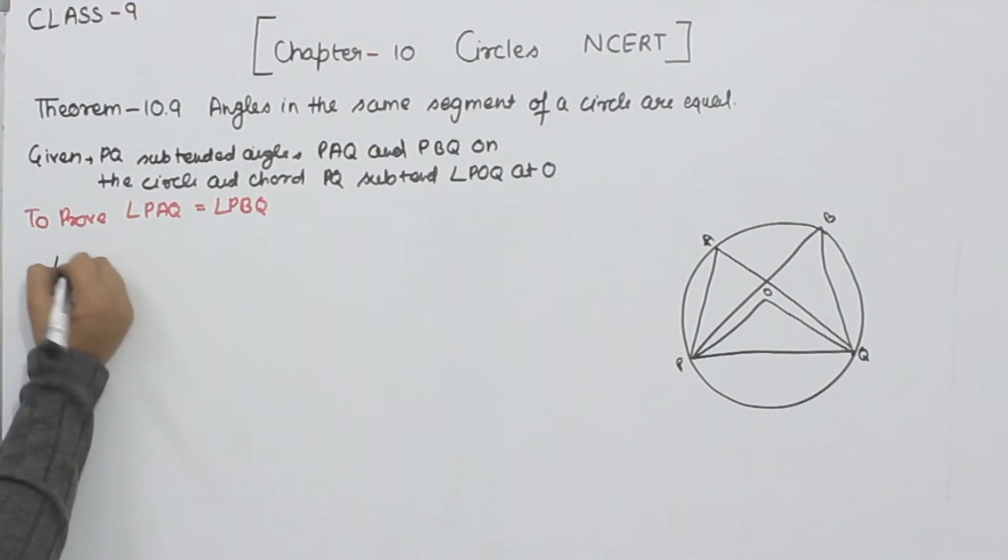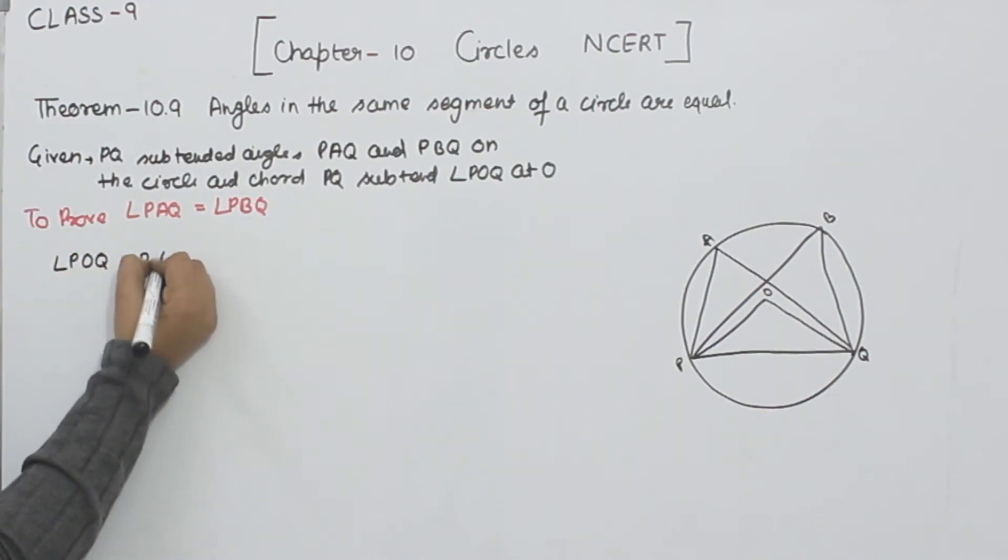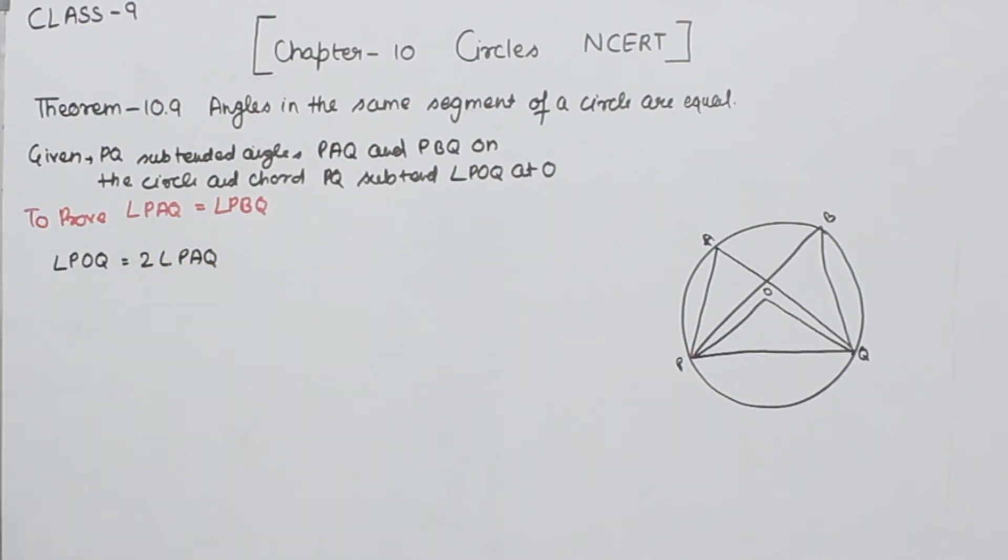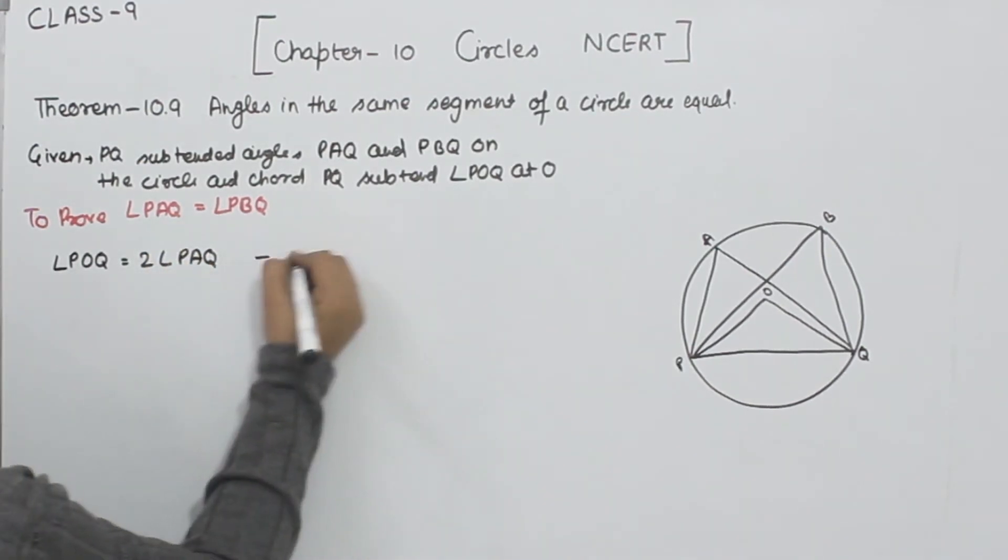So now angle POQ is equal to 2 times angle PAQ. This one. This is equation number 1.